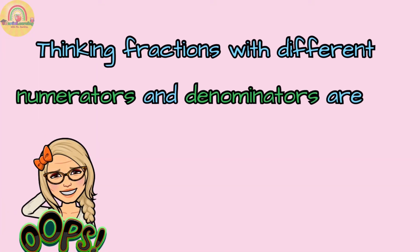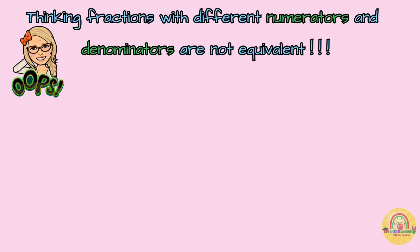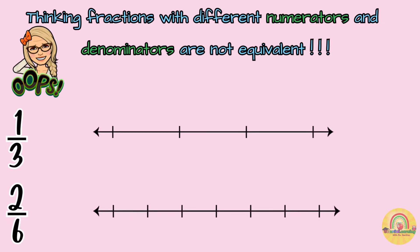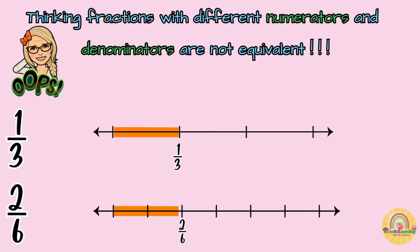Now let's begin with the new content. Do you really think that when we have fractions with different numerators and different denominators, they are not equivalent fractions? Remember that equivalent fractions must show the same amount. When we're talking about number lines, the fractions must show the same distance on the number line. So we're going to place these two fractions on the number lines and analyze if they really show the same distance. Here is the fraction one-third. Here is the fraction two-sixths. Do these fractions show the same distance on the number line? Yes, of course — so they are equivalent fractions.